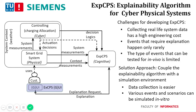There are several challenges when developing an XCPS system. First, collecting real-life system data has a high engineering cost — it takes significant time and effort to connect to sensors, collect data, and pre-process it to the quality level needed. Second, events requiring explanation happen only rarely, making it difficult to test the XCPS across a broad range of events. Third, the types of events that can be tested in vivo is limited; in mission-critical systems, critical events cannot be induced for the sake of testing.